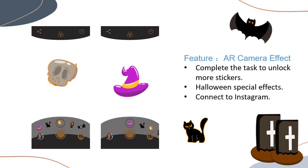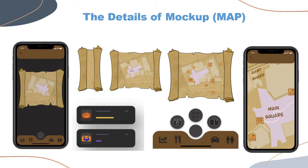The last major feature is the AR camera effect, a feature related to Instagram which allows users to use the photo function in the application and share it with a tag on Instagram for a great Halloween experience. Some users who have just joined will find that some stickers are not yet available, and they will need to collect candy wrappers to unlock them. We used a retro style to make the maps, applying a parchment texture hoping to reflect a medieval style. When the user clicks the scroll, it will open and show the full picture of the square terrain, and clicking again will zoom in and out for clearer viewing.